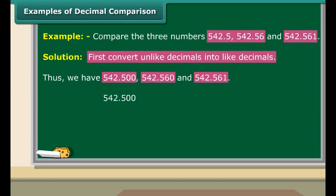Now concentrate on the decimal part alone. The first number represents 500 thousandths. The second number represents 560 thousandths. And the third number represents 561 thousandths. So, 542.561 is greater than 542.5 and 542.56.